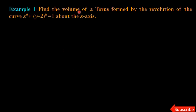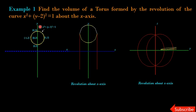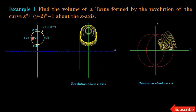First example: find the volume of a torus formed by the revolution of the curve x² + (y − 2)² = 1 about the x-axis. This curve x² + (y − 2)² = 1 is the equation of a circle with center (0, 2) and radius 1.